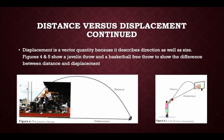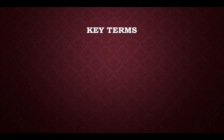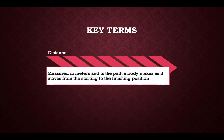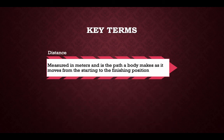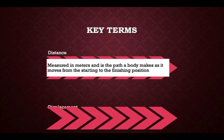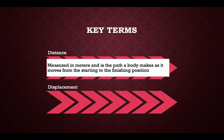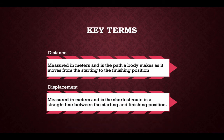As you can see, the javelin travels along a massive distance; however, the displacement is much shorter because it is a straight line from start to end. Key terms: distance is measured in metres and is the path a body makes from starting to finishing point. Displacement is measured in metres and is the shortest route in a straight line between starting and finishing position.